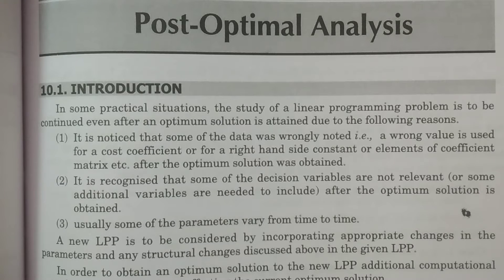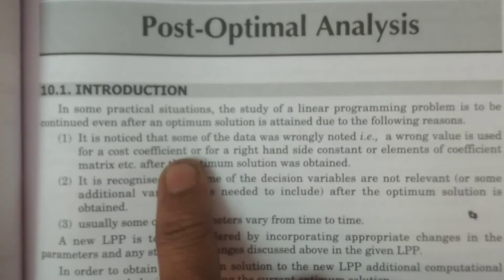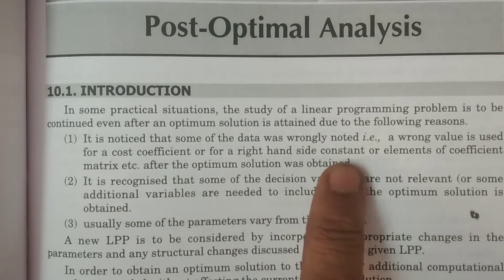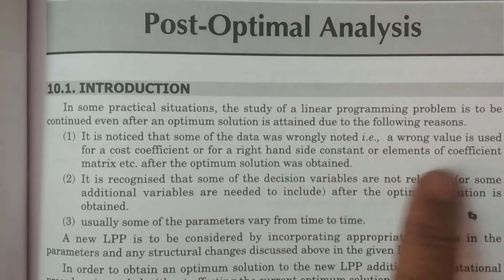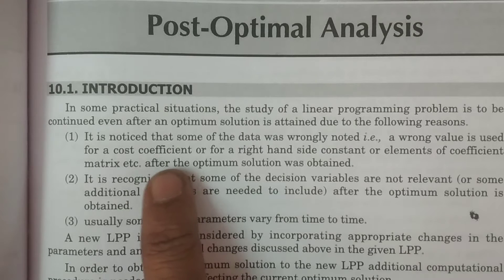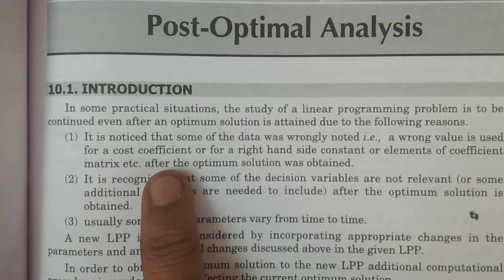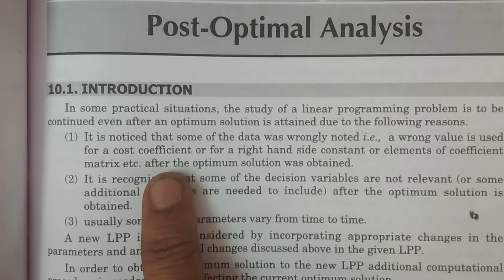What are the reasons? For example, if it is noticed that some of the data was wrongly noted — a wrong value is used for a cost coefficient, that is Cj. If some particular coefficient is not correctly considered, it is wrongly noted.